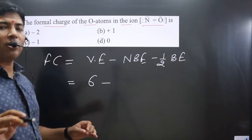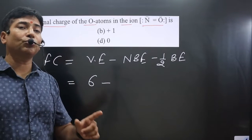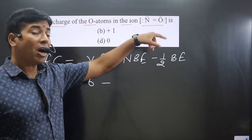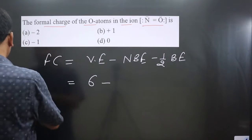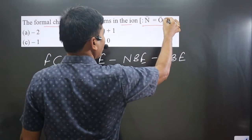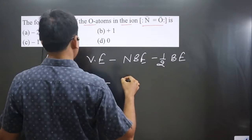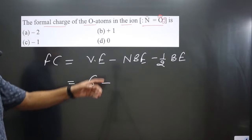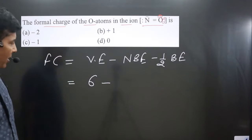Non-bonding electrons are those that do not participate in bond formation. Oxygen has two lone pairs, and each lone pair has two electrons. So the total number of non-bonding electrons is four (2 × 2 = 4).